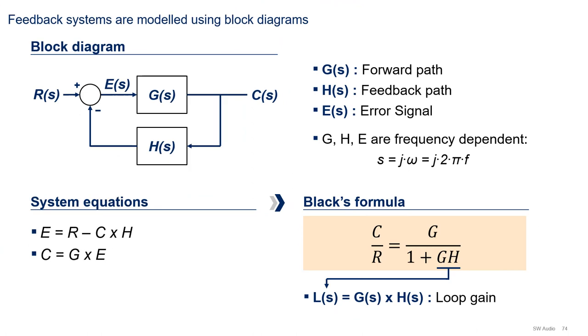Feedback systems are modeled using block diagrams. The diagram shown here is the traditional form. G(s) is called the forward path, H(s) the feedback path, C is the controlled variable, R is the reference variable, and E(s) is the error signal, which is the difference between the feedback signal and reference R. Note that these blocks are frequency dependent, where s refers to the complex frequency j 2π f.